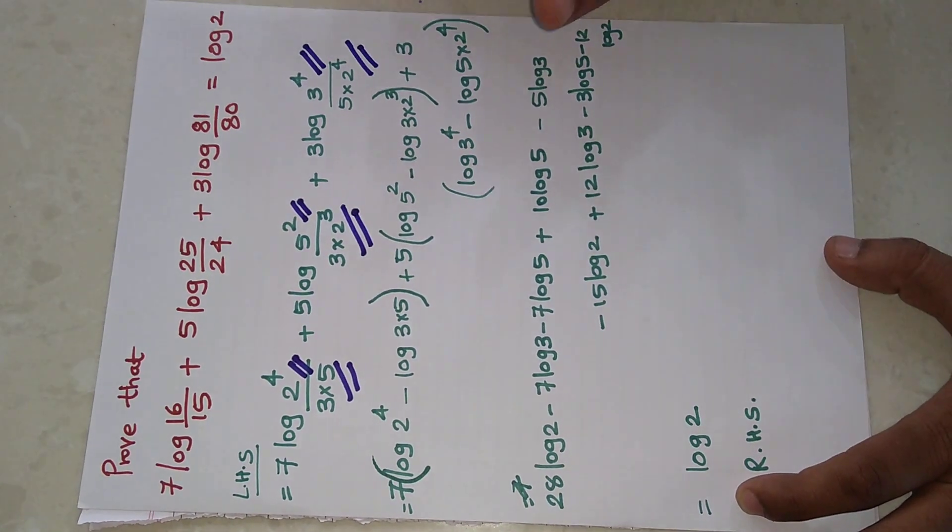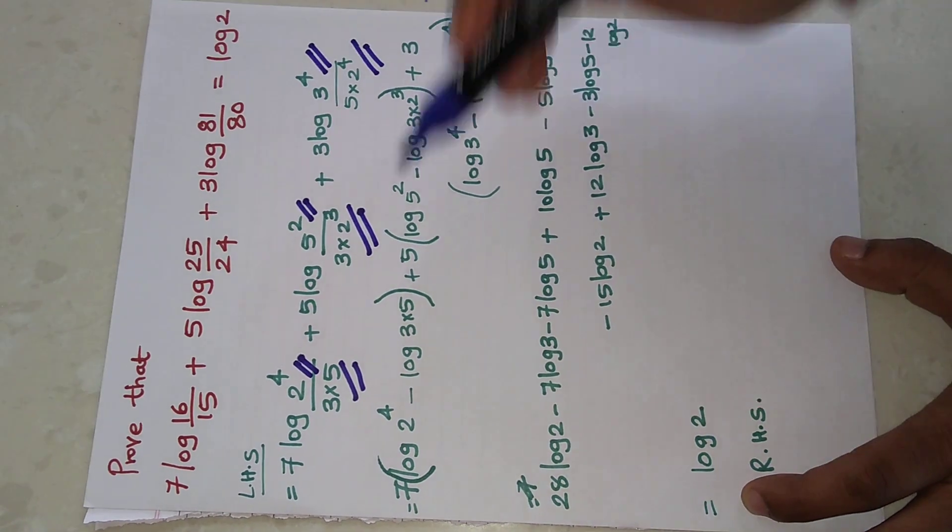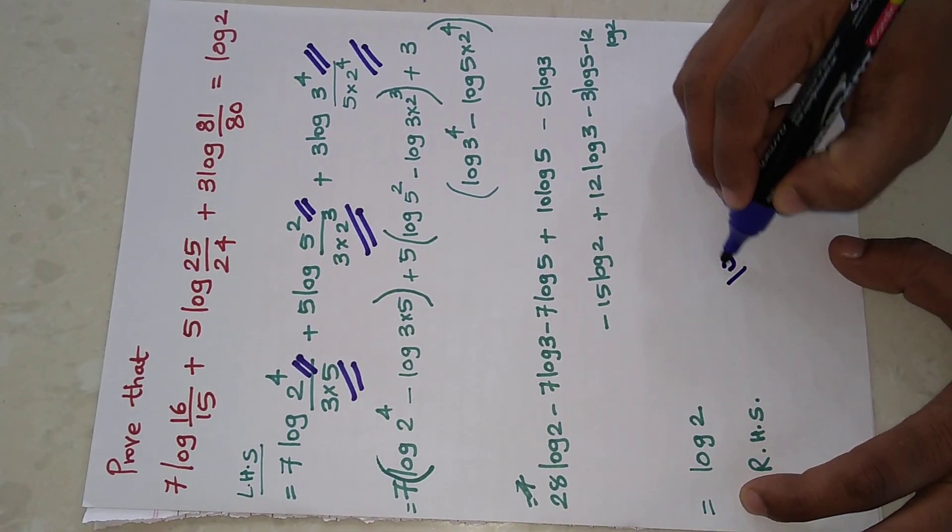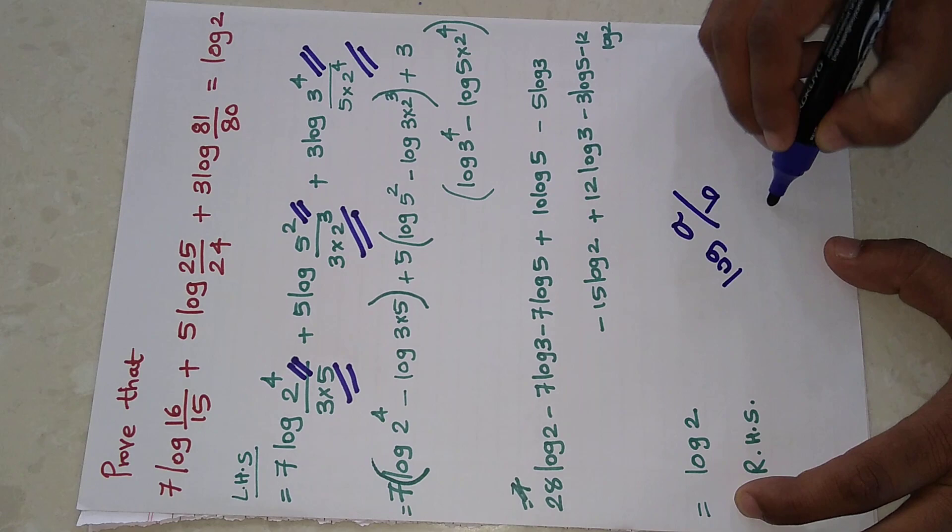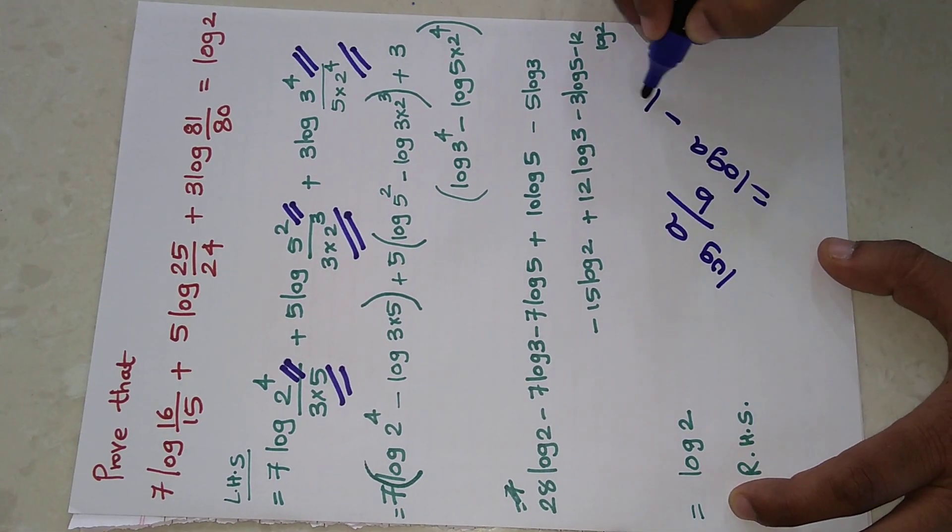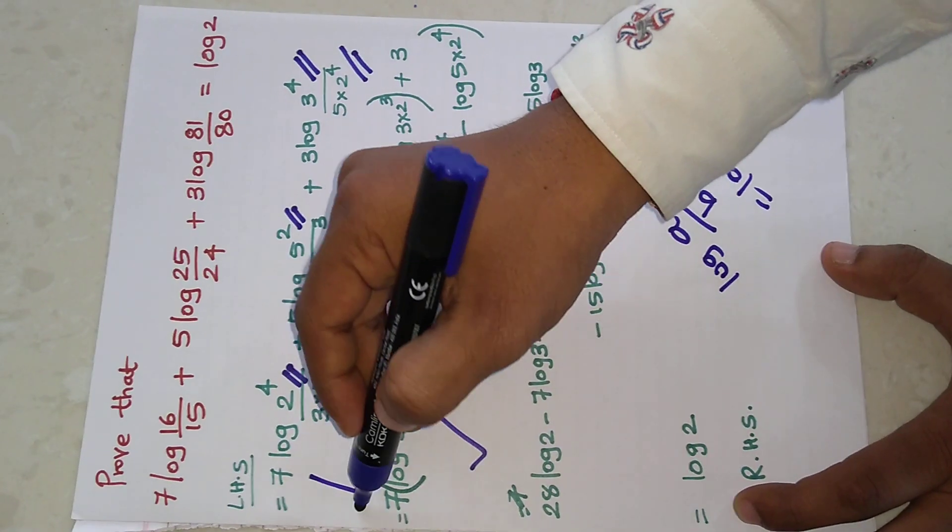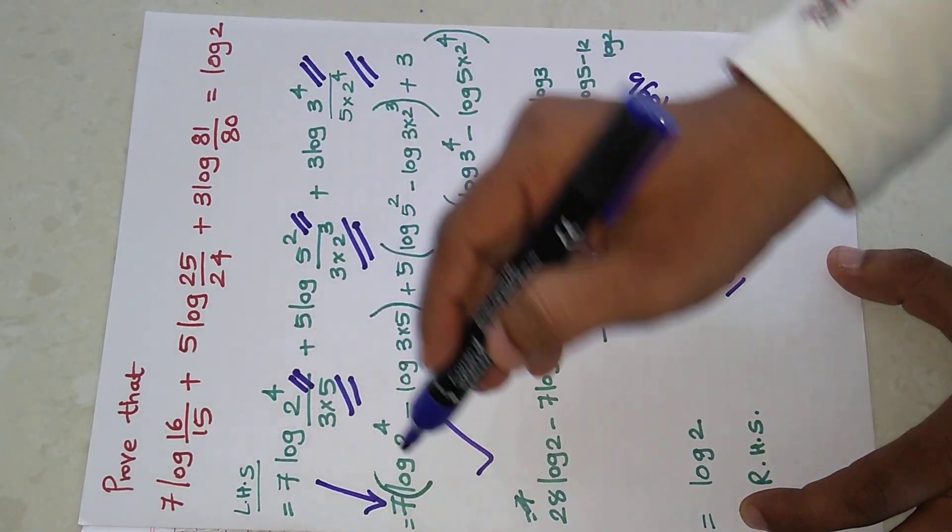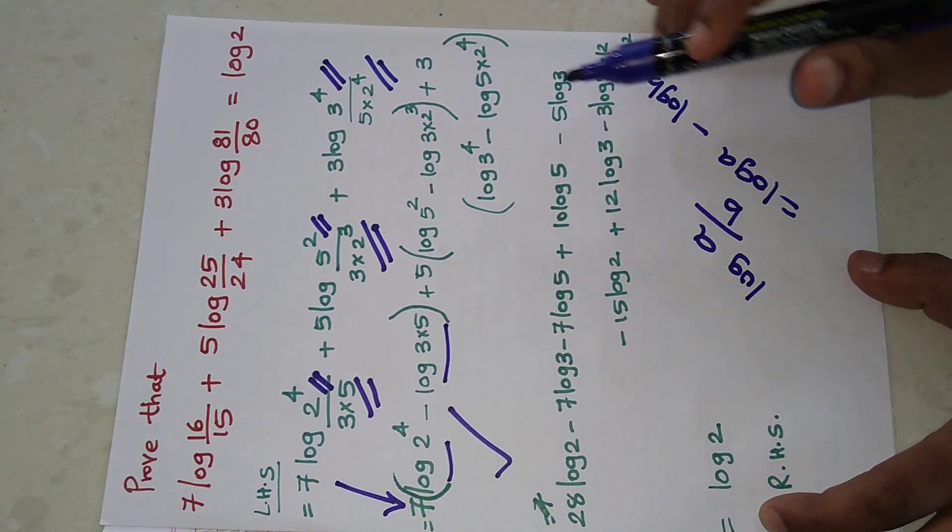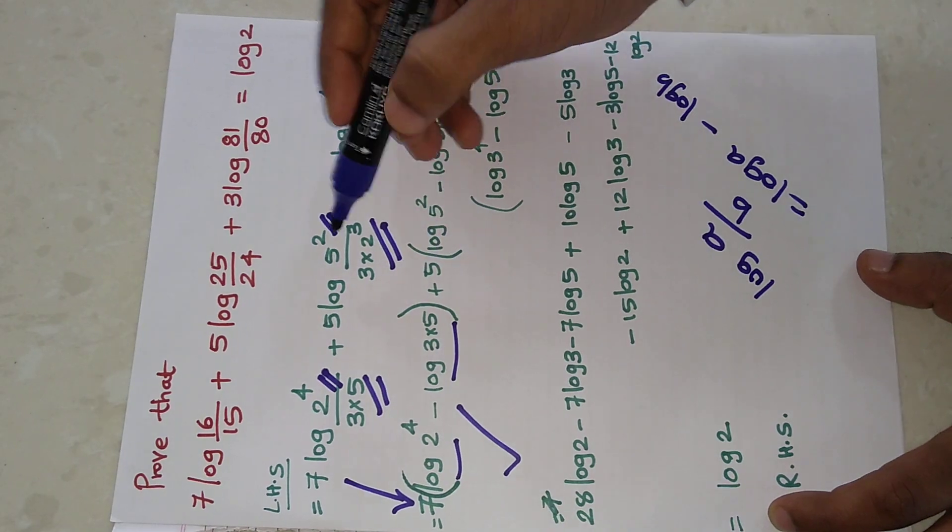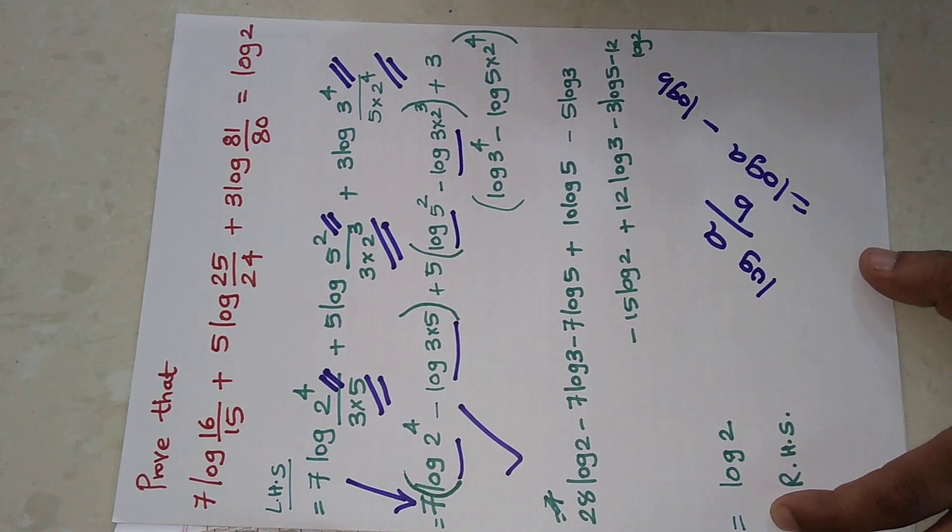Now log(a/b) is equal to log a minus log b. This 7 will remain as it is: log a minus log b. Again 5 will remain as it is: log a minus log b. Again 3 will remain as it is: log a minus log b.